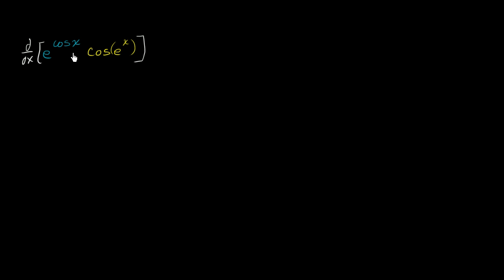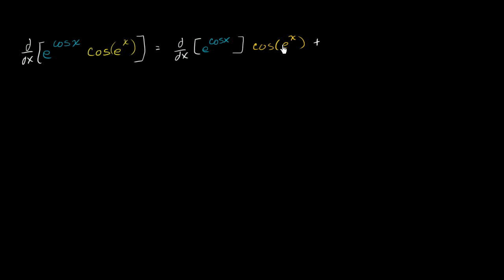We can view this as the product of two functions. The product rule tells us that this is going to be the derivative with respect to x of e to the cosine of x, times cosine of e to the x, plus the first function, e to the cosine of x, times the derivative of the second function — the derivative with respect to x of cosine of e to the x.